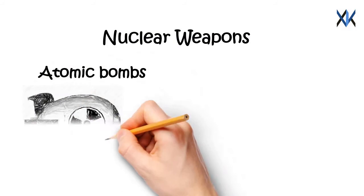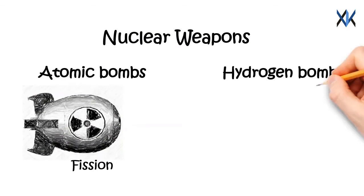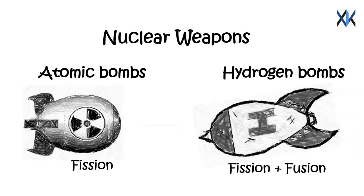So, there are two basic types of nuclear weapons: those which derive majority of their energy from nuclear fission reactions alone, called atomic bombs or atom bombs, and those that use fission reactions to begin nuclear fusion reactions, which produce a large amount of the total energy, are known as thermonuclear weapons or hydrogen bombs.